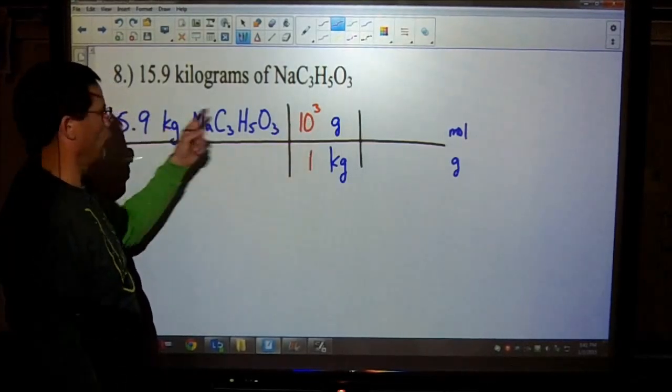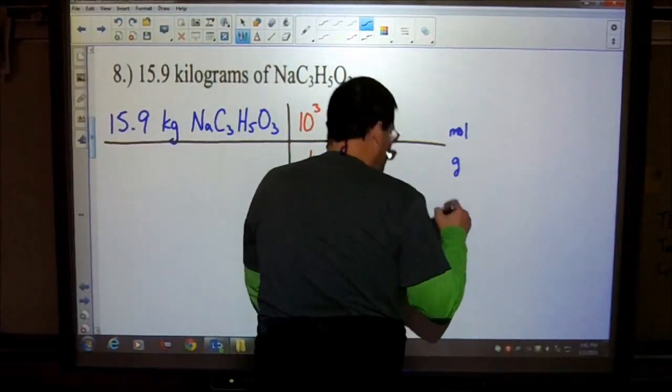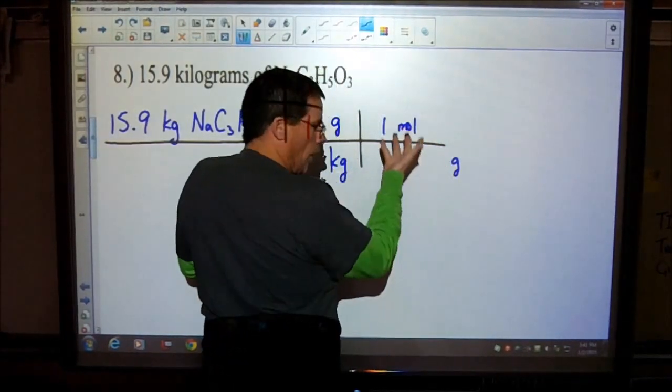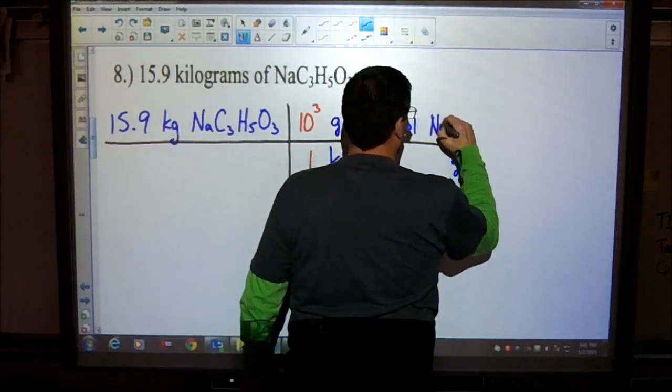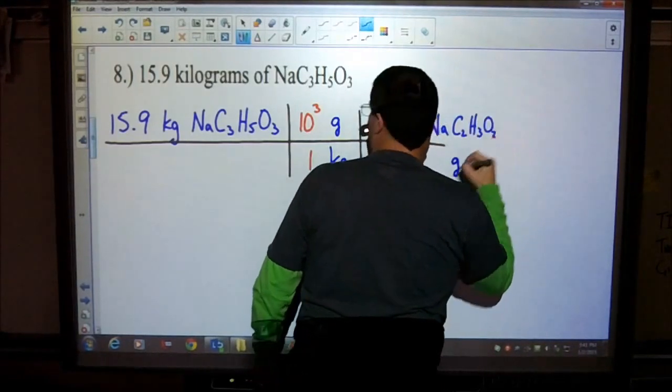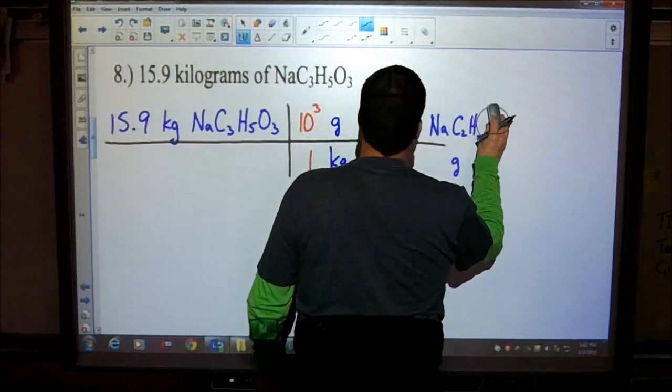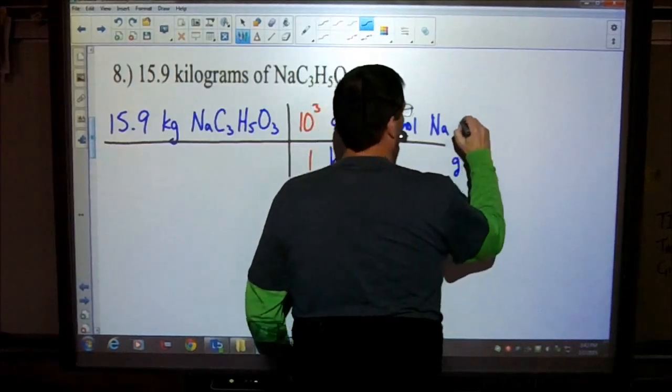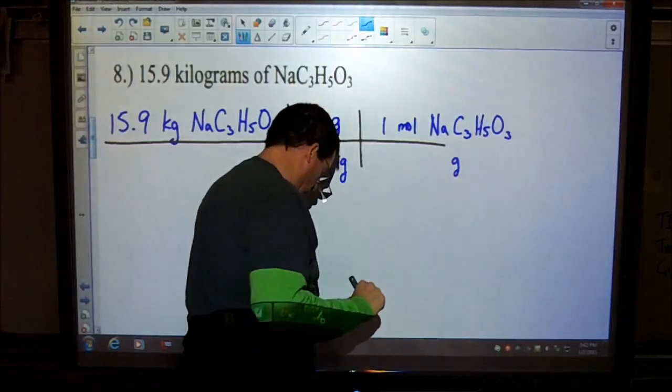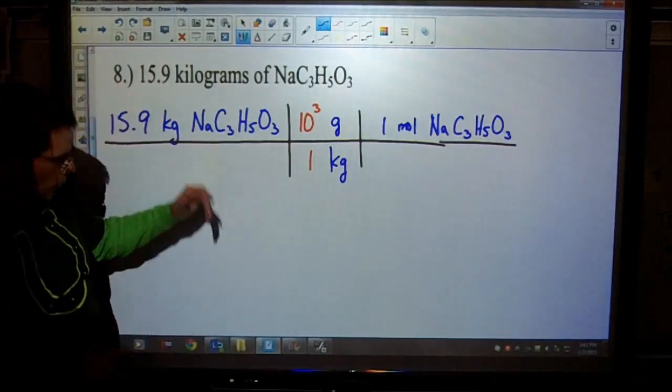There's our conversion. If we were to cancel out our units, we would have grams right now, but we need to go a little bit further. We need to convert this into moles. Whenever we're looking for something, we always want to make sure that we're looking for one mole in our problem, one mole of whatever it is that we're looking for, sodium acetate. Let's find out what the molar mass is.